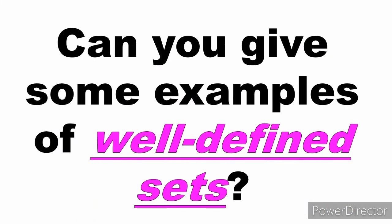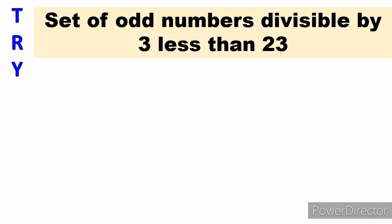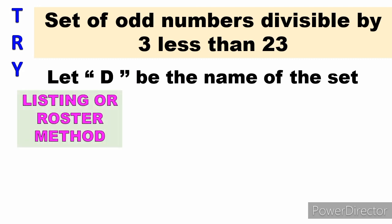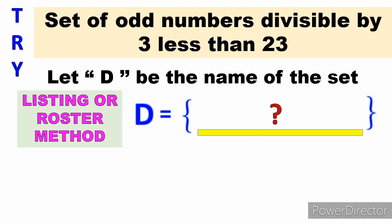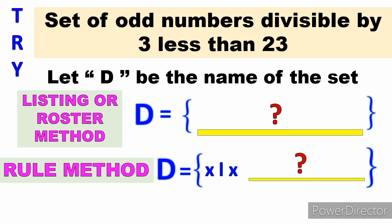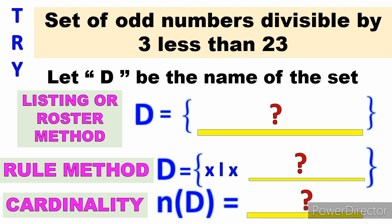Now you know how to name a set, write elements using the roster and rule methods, and find cardinality. Can you give at least three examples of well-defined sets? Let's also try this activity: the set of odd numbers divisible by 3 that are less than 23. Let D be the name of the set. Try writing it in listing or roster method, rule method, and find the cardinality. Good luck!